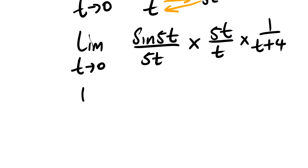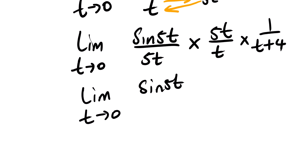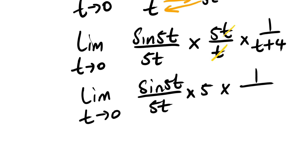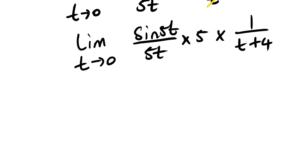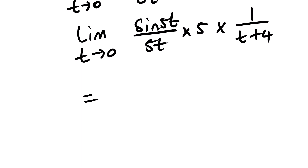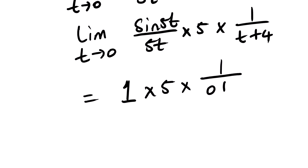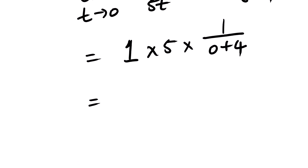Now you can see that our identity sin 5t over 5t is present. The t in 5t over t cancels the t in the denominator, leaving us with 5. So we are left with 5 multiplied by 1 over t plus 4. Then, substituting t equals 0, this becomes 1 times 5 times 1 over 0 plus 4, which gives 5 times 1 over 4. Our answer is 5 over 4.